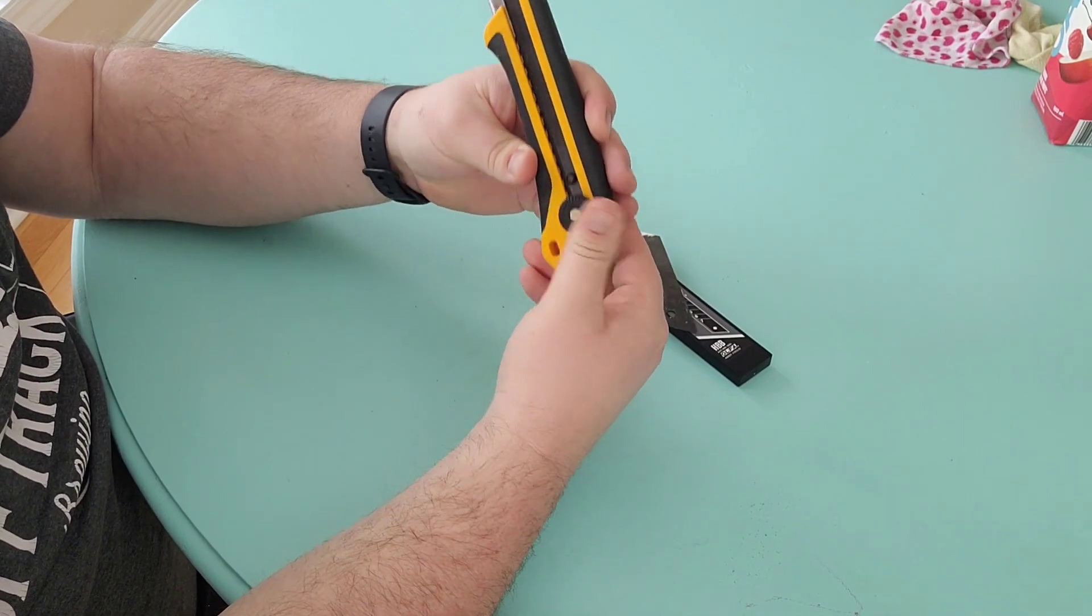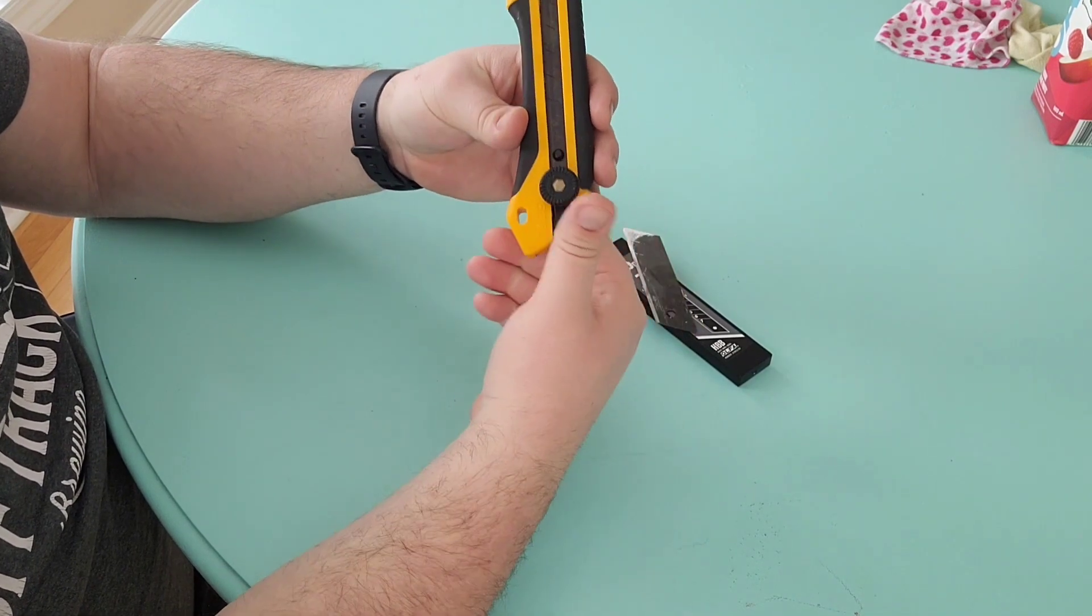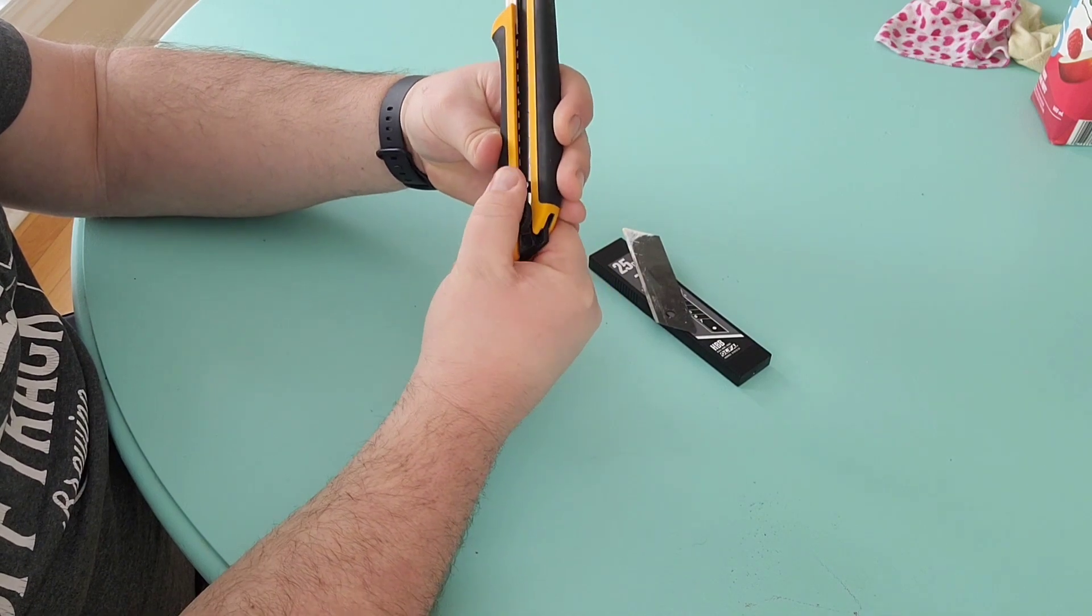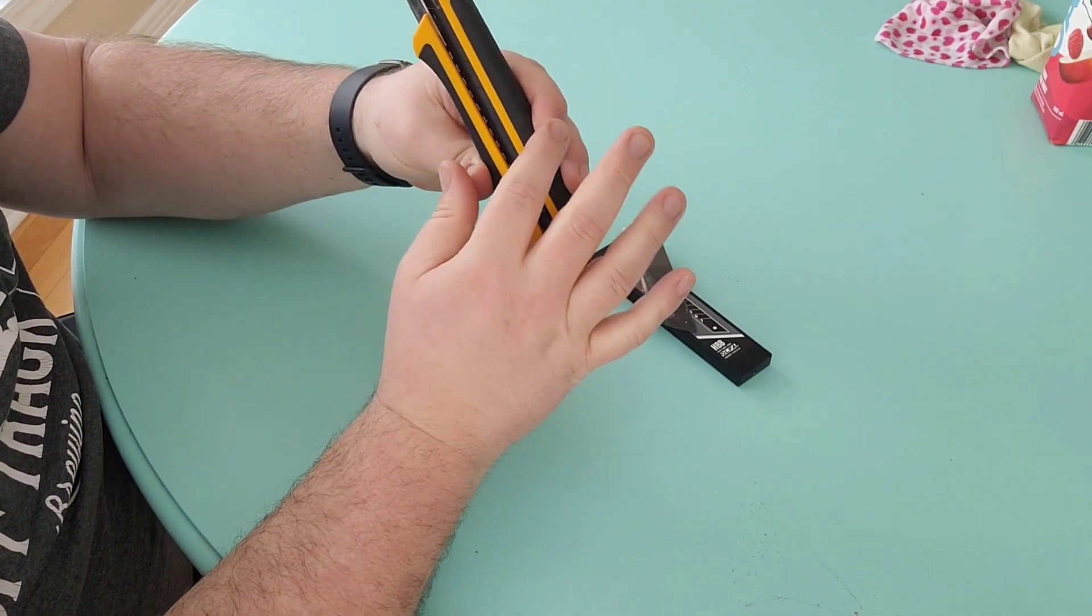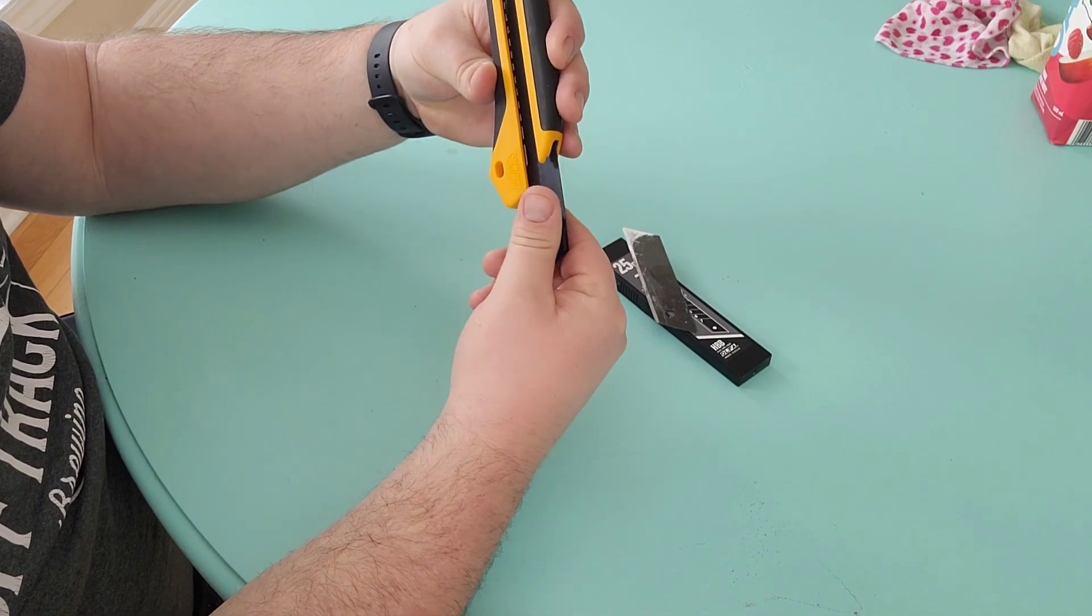The trick to get it out is loosen it all the way, bring it down here, push down and then pull gently. Be careful to have your fingers out of the way up here so you don't get caught on this sharp nub. Then you can change it and put it back in.